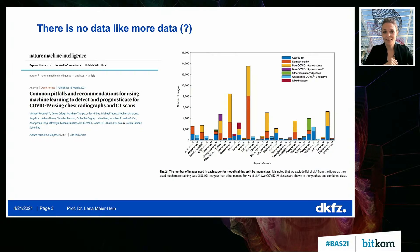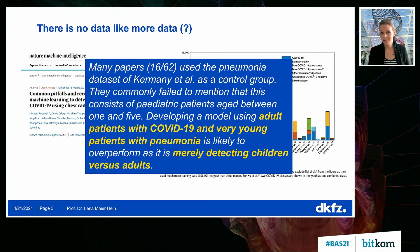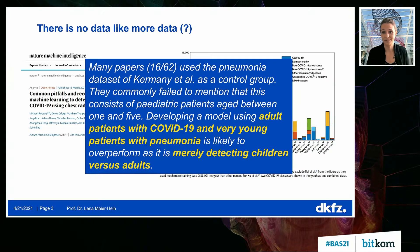A very recent paper observed that a lot of authors merged data from infants with pneumonia with data from adult COVID patients. This is not a single example — it occurred in a lot of papers. A machine learning algorithm capable of distinguishing adults from children will have 100% accuracy if you use just these two data sets, which is obviously a problem.